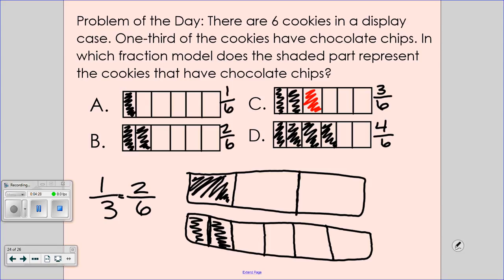So this model right here, B, that represents two-sixths, it also represents one-third. Is it broken into thirds? No. But the value of the shaded area is the same as if it were broken into thirds.